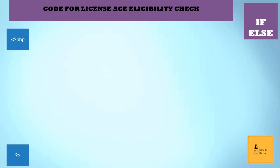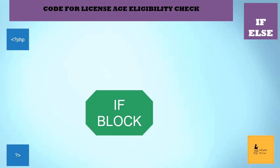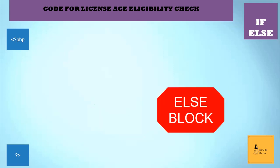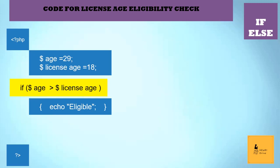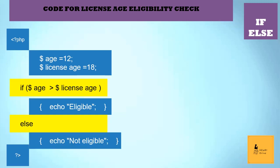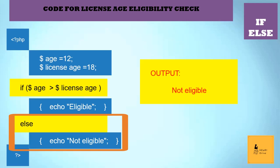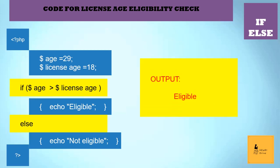In the if-else statement, if the condition is true, the if block will be executed. If the condition is false, the else block will be executed. The same code as the if statement is used, but here we'll add an else block as we need an alternative output if the condition fails. In the else block, I'm giving an echo statement for not eligible. If I give age as 12, I'll get the output as not eligible, and the else block will be executed. If the age is set as 29, the output will be eligible and the if block will be executed.